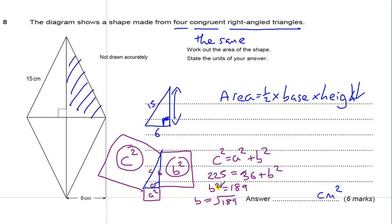Okay, if you got to that point, you've earned three out of your six marks. If you've got the centimetres squared, you've got four out of your six marks, three for this square root of 189, and one for your units.